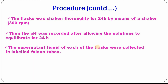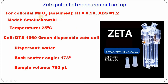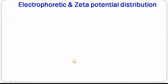The supernatant liquid of each flask was collected into labeled Falcon tubes. Zeta potential was measured at 25°C using 760 microlitre of supernatant loaded into the sample cuvette, and corresponding data was recorded. For manganese dioxide, the refractive index, absorbance, and model parameters were set accordingly, temperature was 25°C, a green disposable zeta cell was used, dispersant was water, backscatter angle was 173°, and sample volume was 760 microlitre.